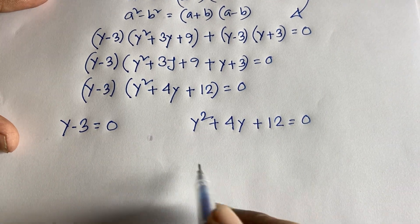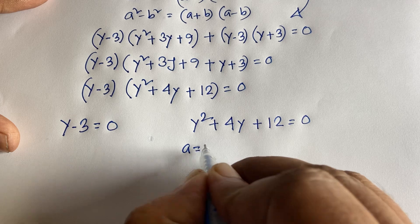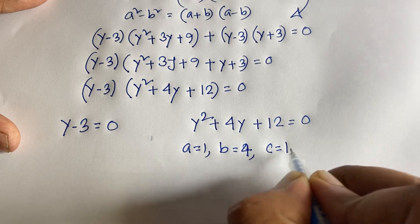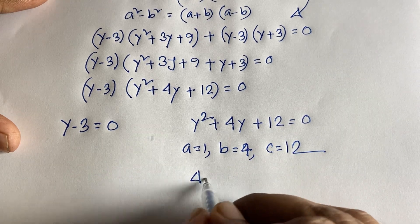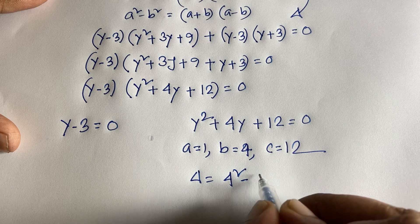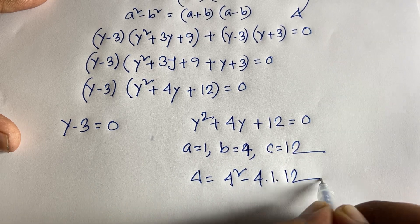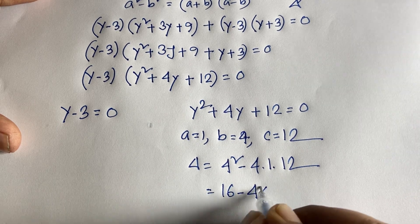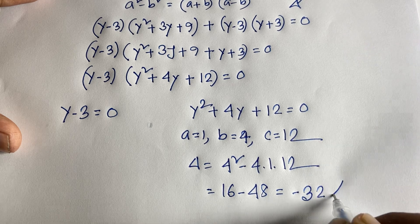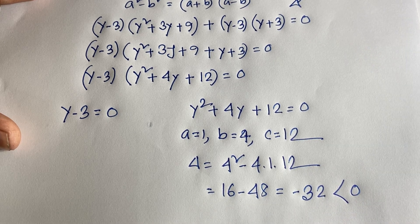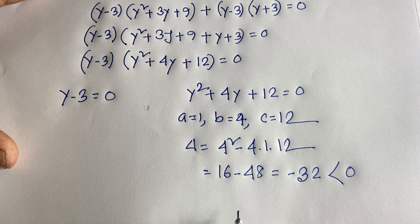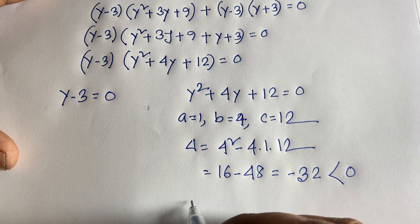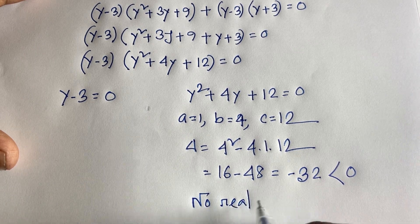For the quadratic, a = 1, b = 4, c = 12. The discriminant is delta = b² − 4ac = 16 − 48 = −32, which is less than 0. So there is no real solution from this case — only complex numbers.